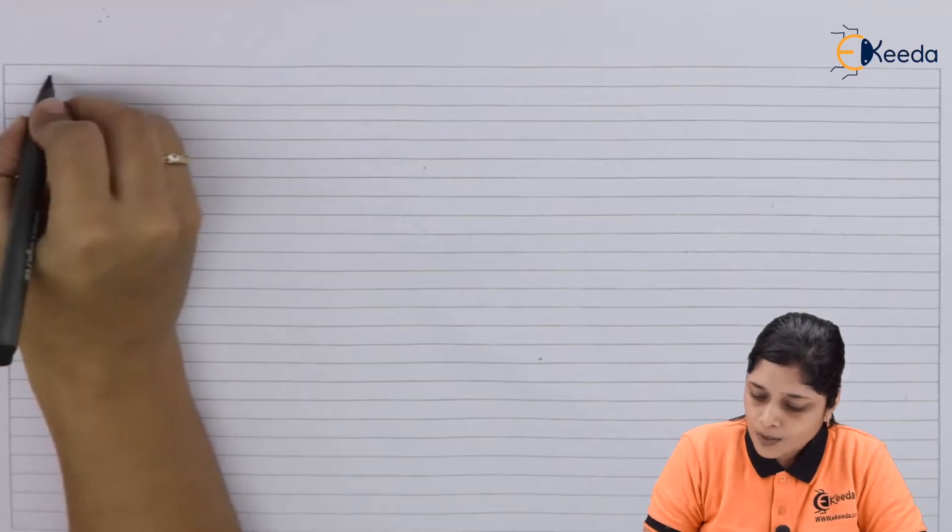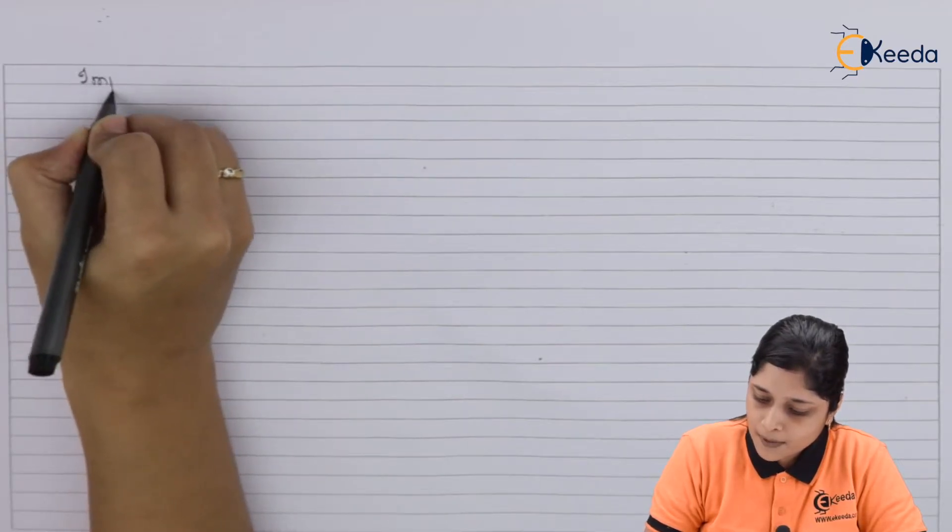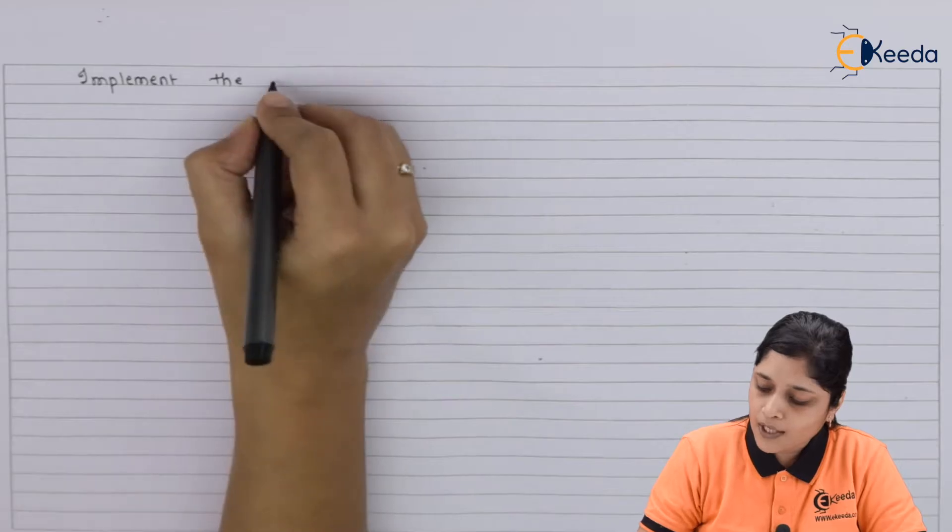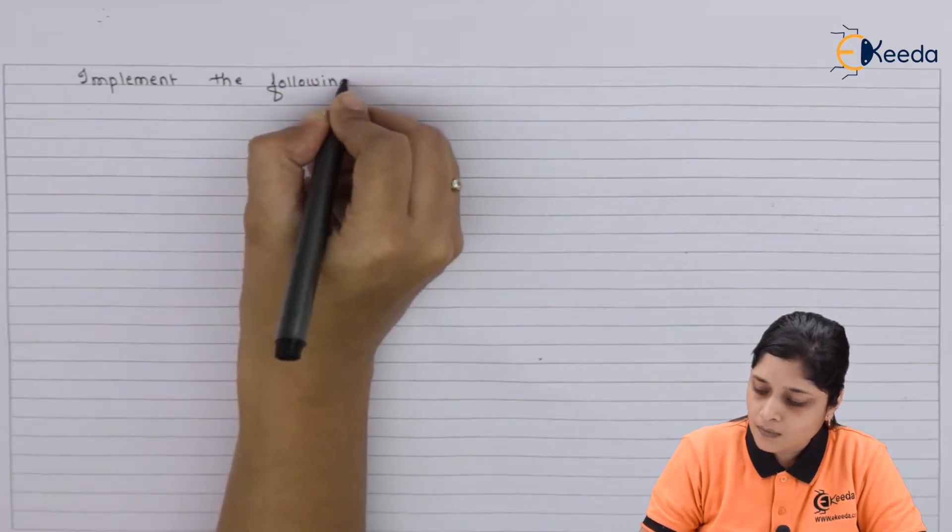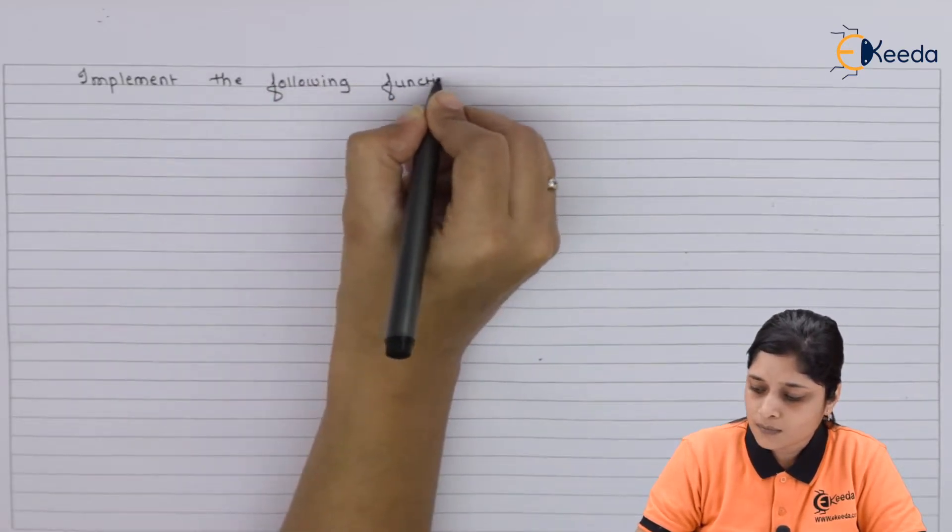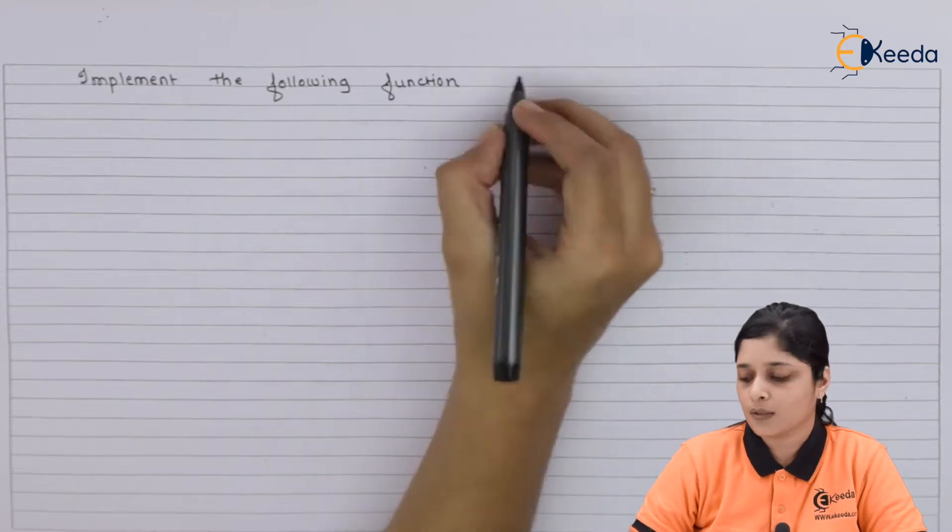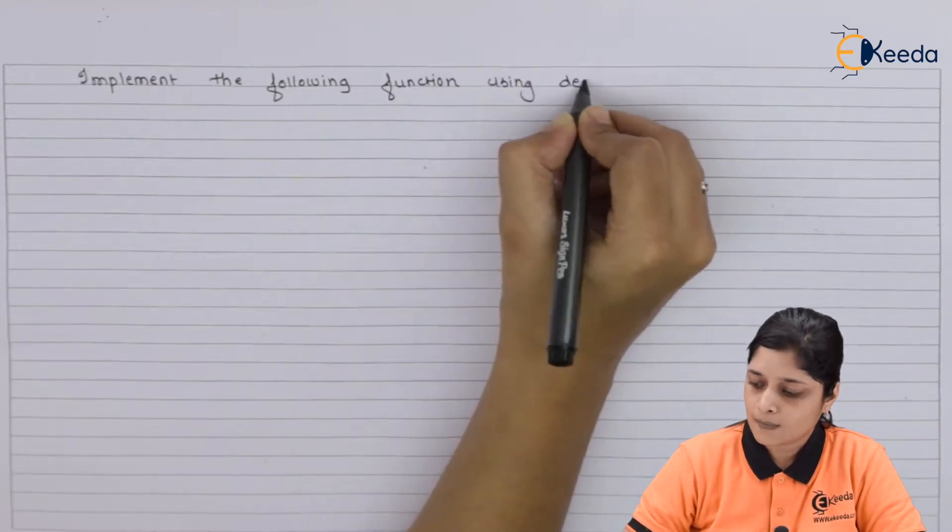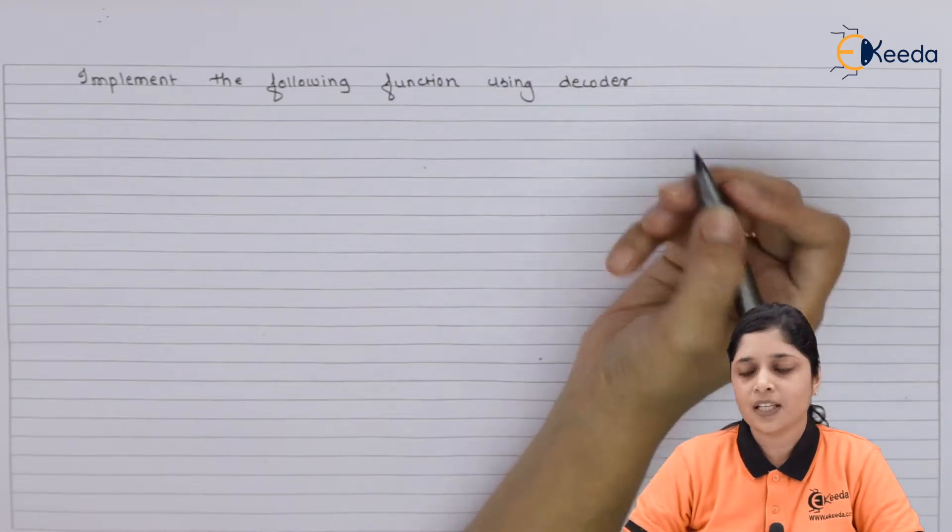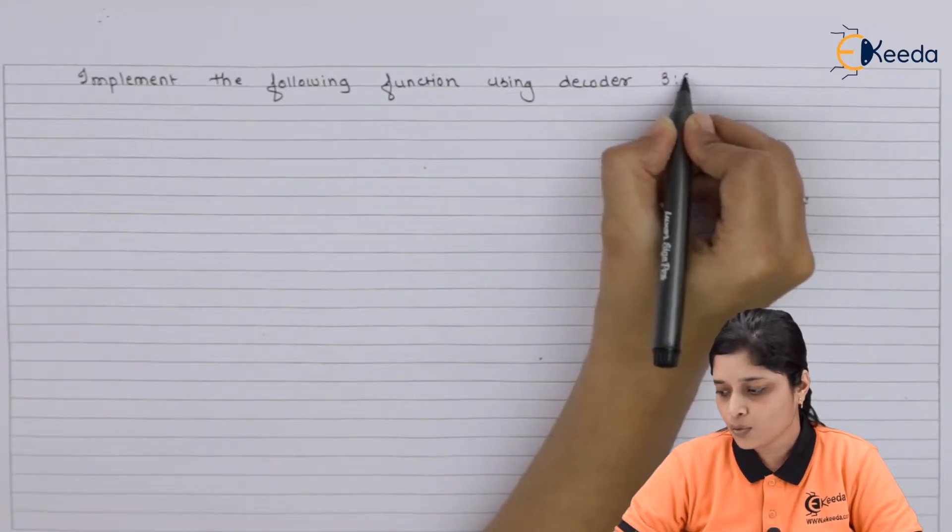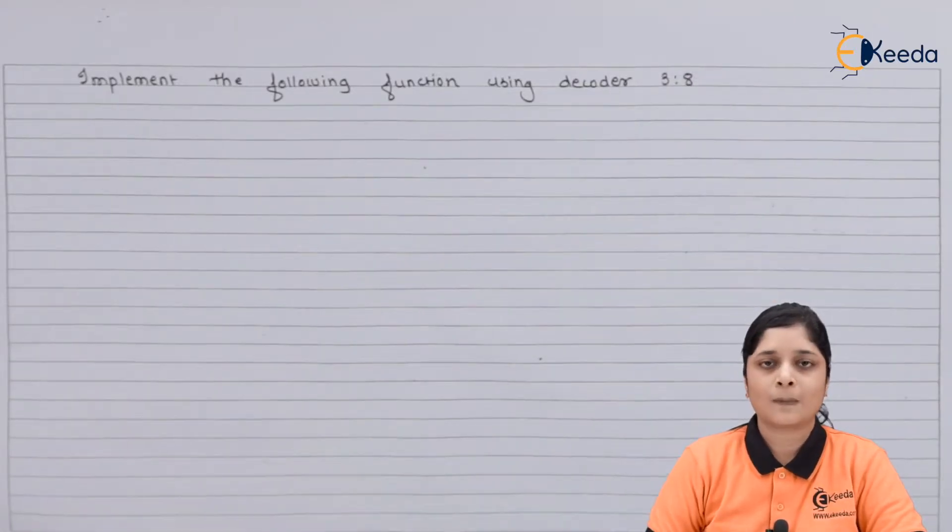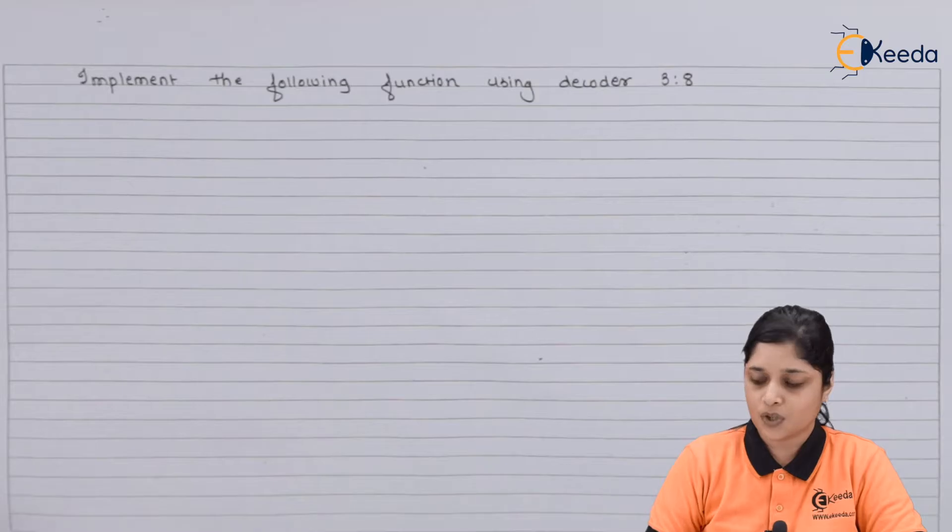So your question is implement the following function using decoder, and specifically it is 3-to-8 decoder. Now what is the expression?